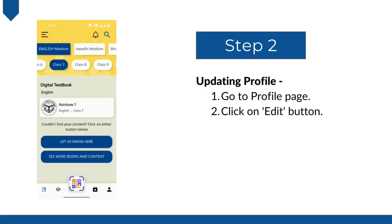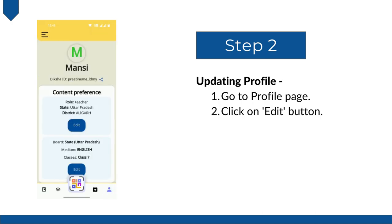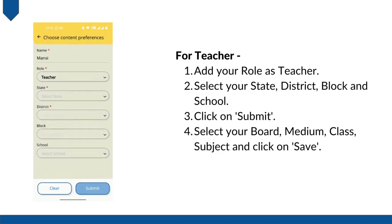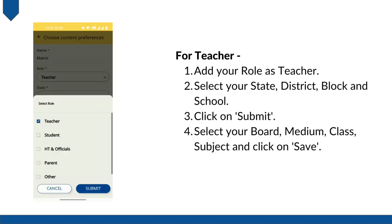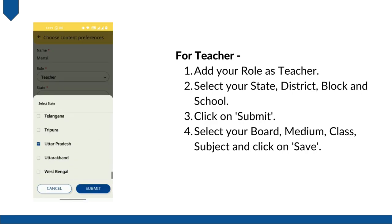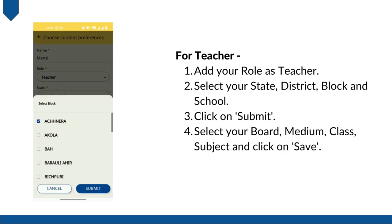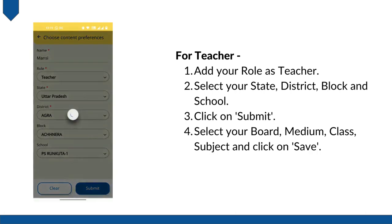The second step is to update your profile. Go to the profile page by clicking on the profile icon in the bottom right corner of the app. On this screen, click on the edit button to update your profile. In the role, select teacher if you are a teacher. Select your state, your district, your block, and the name of your school. Then click on submit.